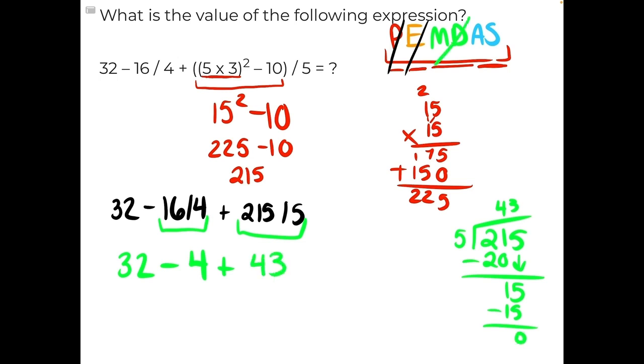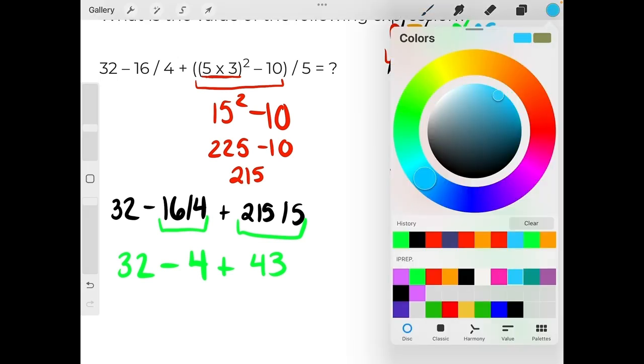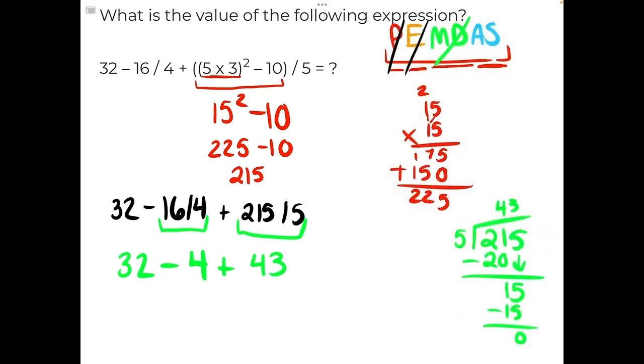Now multiplication and division is done, and we can move on to addition and subtraction, the final step. You want to do this from left to right. So starting with 32 minus 4, that will give us 28. And then 28 plus 43 is our final step.